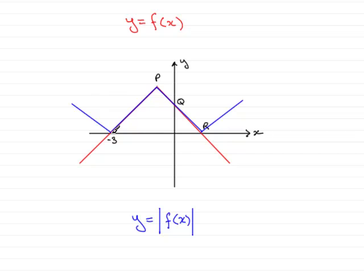So we get this particular shape. So I'll remove the red graph, and we have the final graph then of y equals the mod of f of x. And that brings us now to the end of this part of the question.